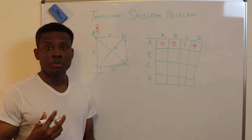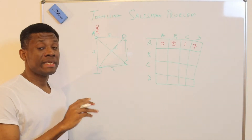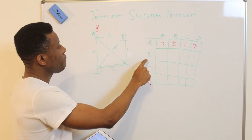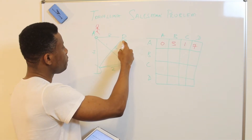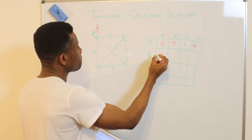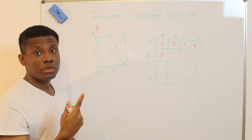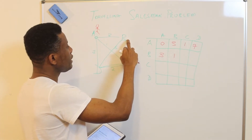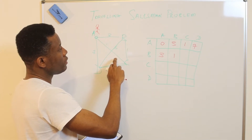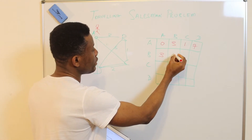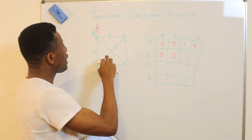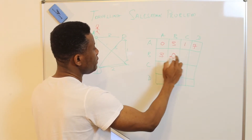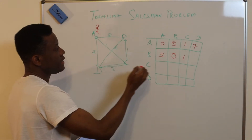Let me complete the table. From B to A is three — the same as A to B, though that may not always be the case. B to B is zero. B to C is one. And B to D is five.